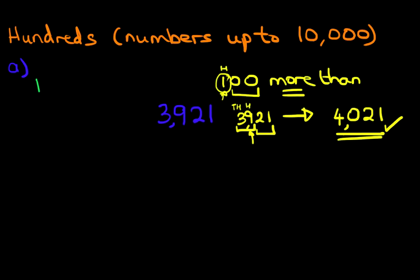Now, on this side, we're going to look at, the question is, what is 100 less than 3,921? Well, the first thing, let's write the number down. 3,921. Are we going to count forwards or backwards? Well, it's less than, so therefore, we're going to count backwards.